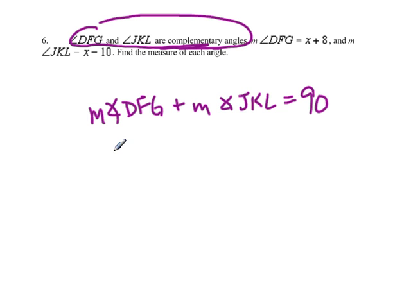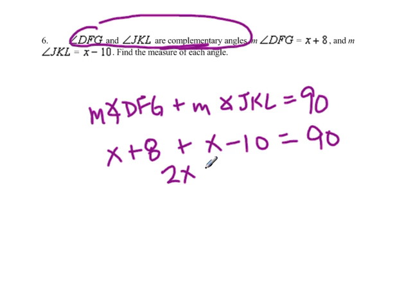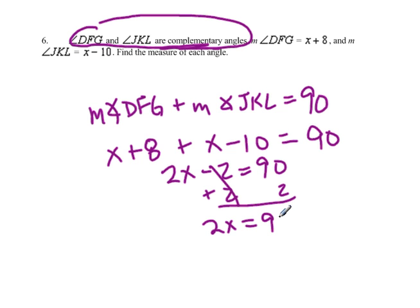So therefore, substitute in x plus 8 plus x minus 10 equals 90. So we have 2x minus 2 equals 90 by combining like terms. Adding 2 to both sides, 2x equals 92. Divide, so x equals 46.